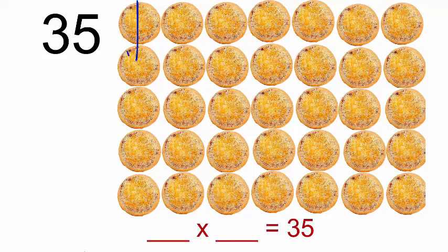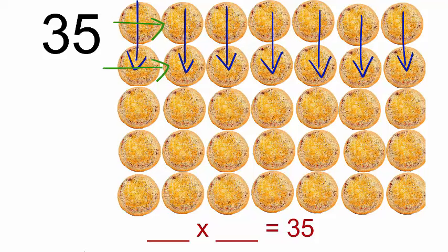Right here we have seven columns and five rows.